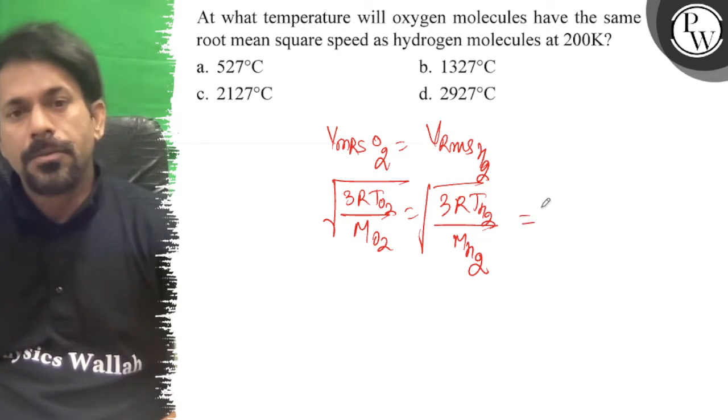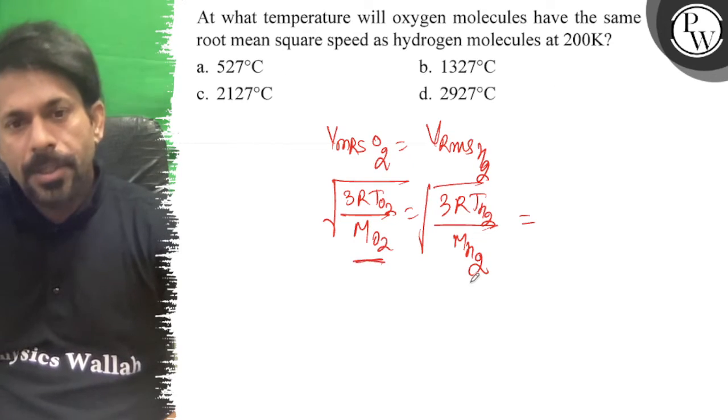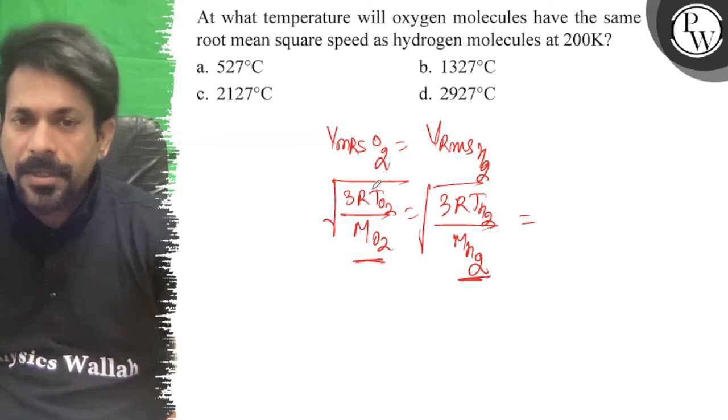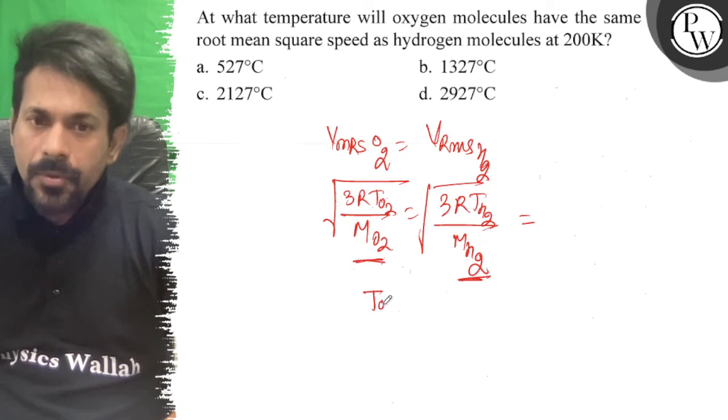So the 3R terms cancel. The molar mass is 32 for oxygen and 2 for hydrogen. So T of O2 upon M of O2 equals T of H2 upon M of H2.